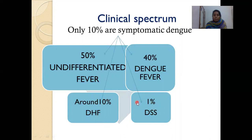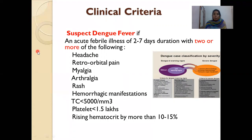Coming to clinical criteria: suspect dengue fever if fever is present for 2 to 7 days duration with two or more of the following — headache, retro-orbital pain, myalgia, arthralgia, rash, hemorrhagic manifestations, leukopenia with TC less than 5000, platelets less than 1.5 lakhs, or hemoconcentration as evidenced by rising hematocrit by more than 10 to 15 percent. This can be lab-proven dengue or probable dengue.